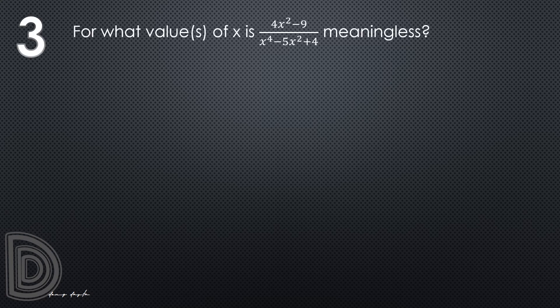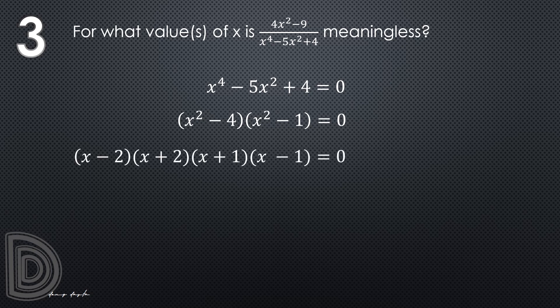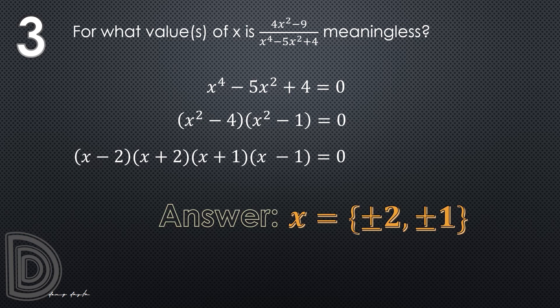Let us proceed to question number 3. We are asked for the values of x for which 4x squared minus 9 all over x to the 4th minus 5x squared plus 4 is meaningless. For this expression to be meaningless, the denominator must equal 0. So we set x to the 4th minus 5x squared plus 4 equals 0 and factor: (x squared minus 4)(x squared minus 1) equals 0, which factors further as (x minus 2)(x plus 2)(x plus 1)(x minus 1) equals 0. Therefore x equals 2, negative 2, 1, and negative 1.